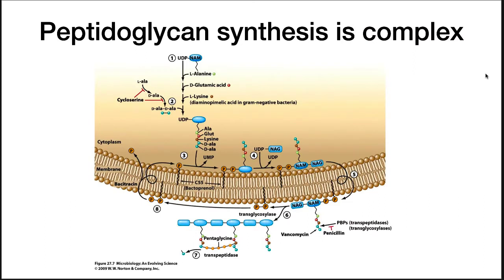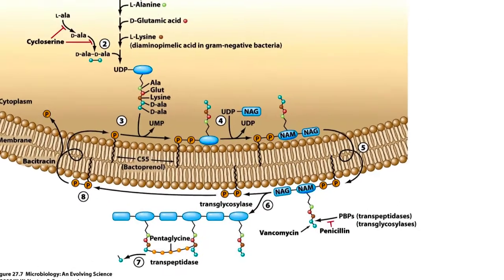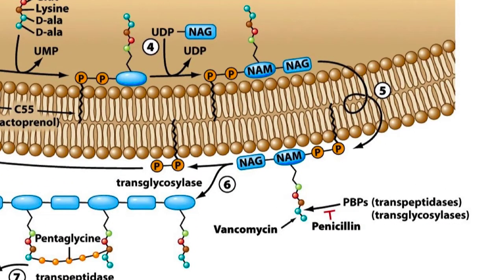It won't surprise you to find out that the synthesis of peptidoglycan is complex, as shown in this figure. The synthesis of monomers occurs in the cytoplasm. After the creation of a NAM-NAG monomer, it flips to the outside of the membrane. Here, transglycolases build the glycan backbone, and transpeptidases make links between the backbone.